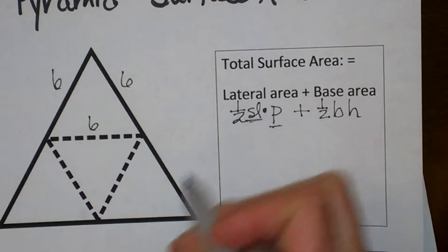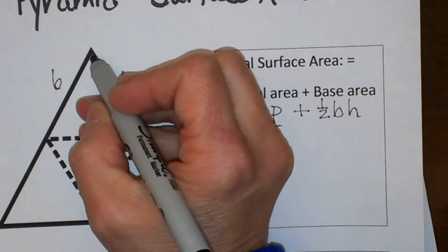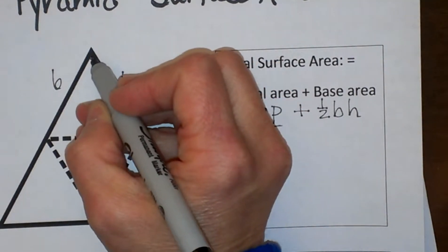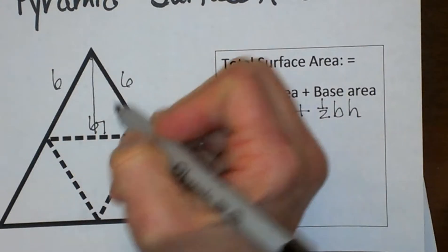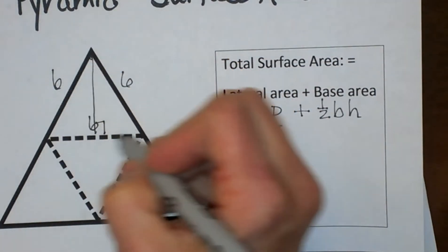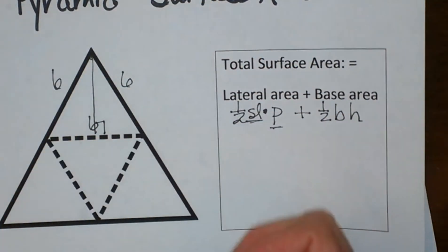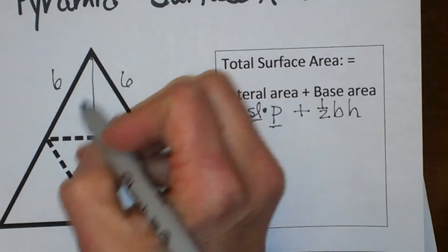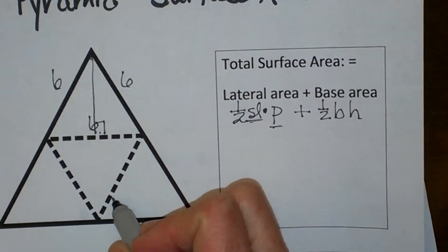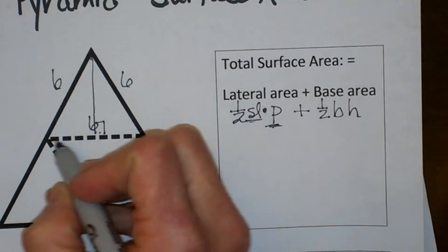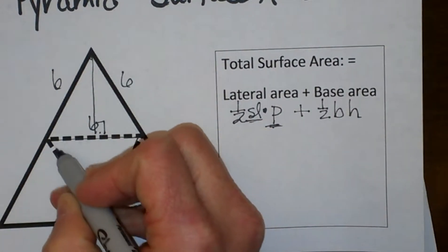Okay so slant height, in the last video I explained what slant height was, but it is the distance from the apex down to the base of the triangle on these faces that actually stand up. What I need to do is figure out the slant height and then I am going to take the perimeter and the perimeter I am going to take is the perimeter of this base.